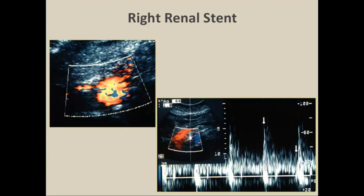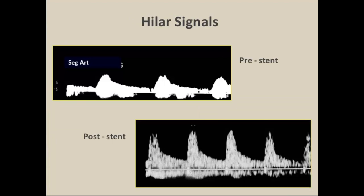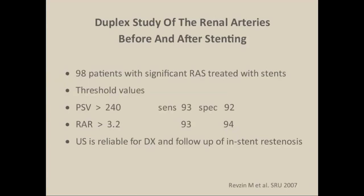Doppler is also very good for following patients after stent placement — I find it my preferred evaluation in patients with renal stents. We can see the stents on ultrasound, see blood flow through them, and determine peak systolic velocity to assess for in-stent restenosis. Before stent placement we see abnormal hilum waveforms; after successful stent placement there's a return to normal hilum waveforms. In our data, a velocity greater than 240 cm/s and a renal aortic ratio greater than 3.2 indicate in-stent restenosis.